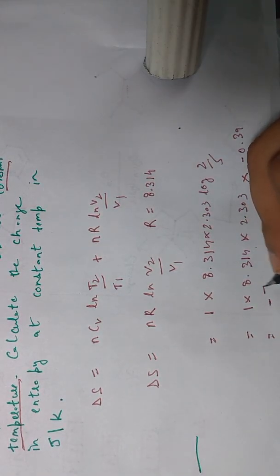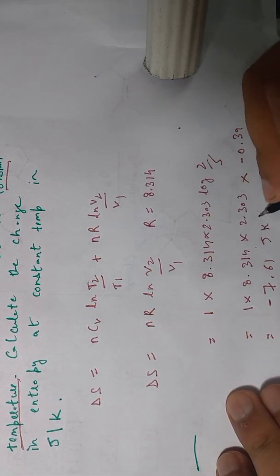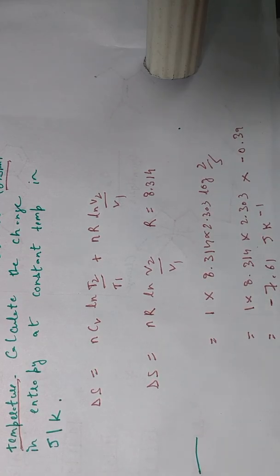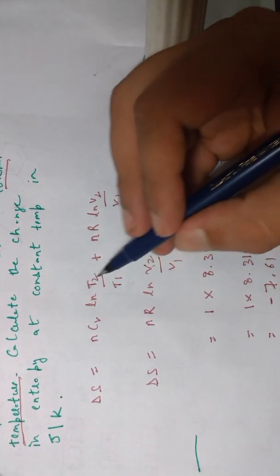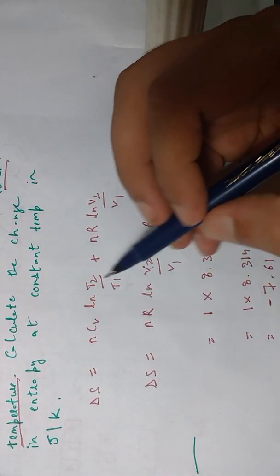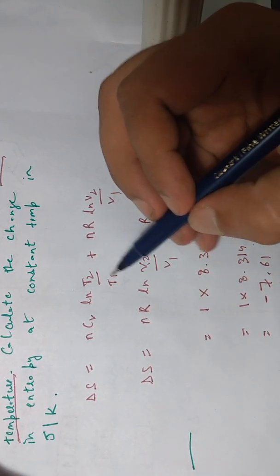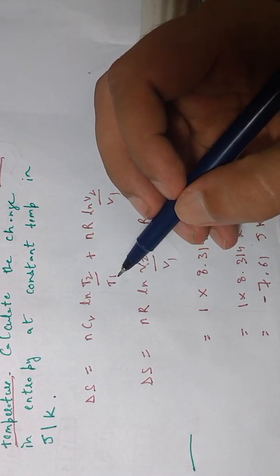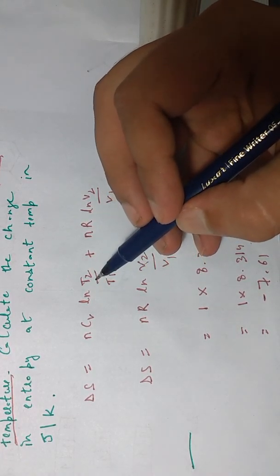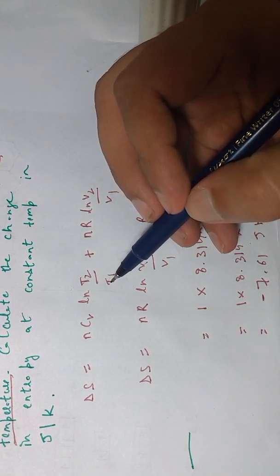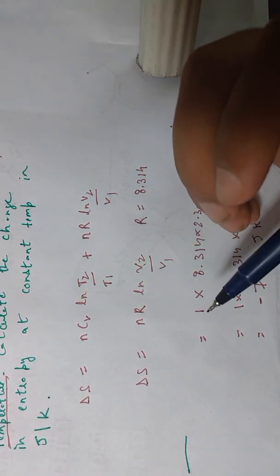Some people have doubt over here about how this term becomes zero. At constant temperature means there is no change in temperature, so T2 equals T1. If T2 equals T1, then this term becomes 1, and natural log of 1 is nothing but zero. So this term overall comes out to be zero.